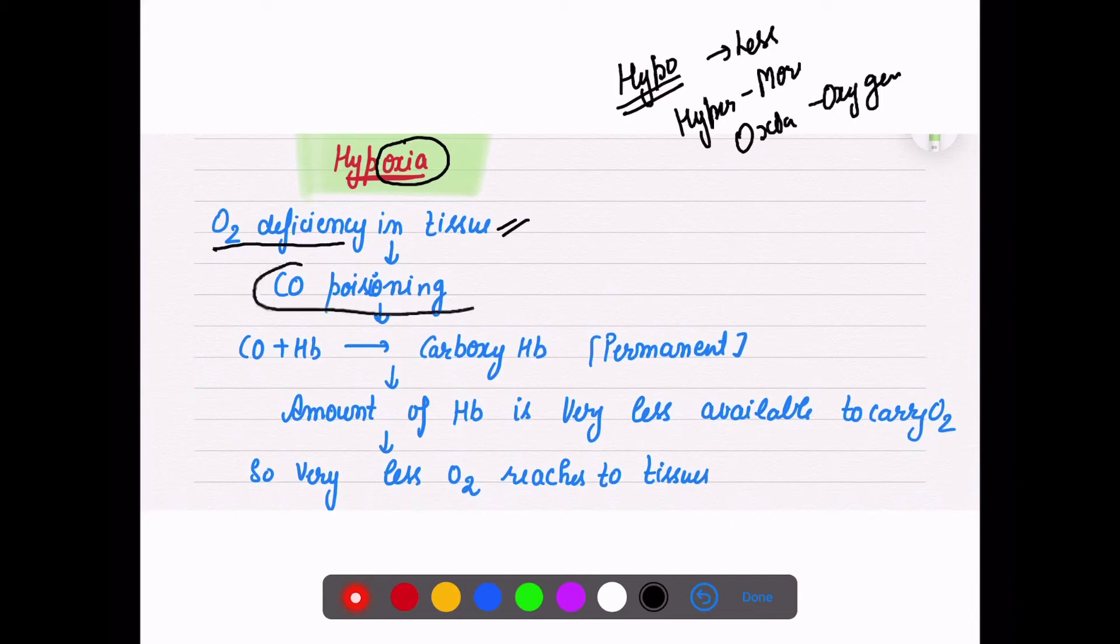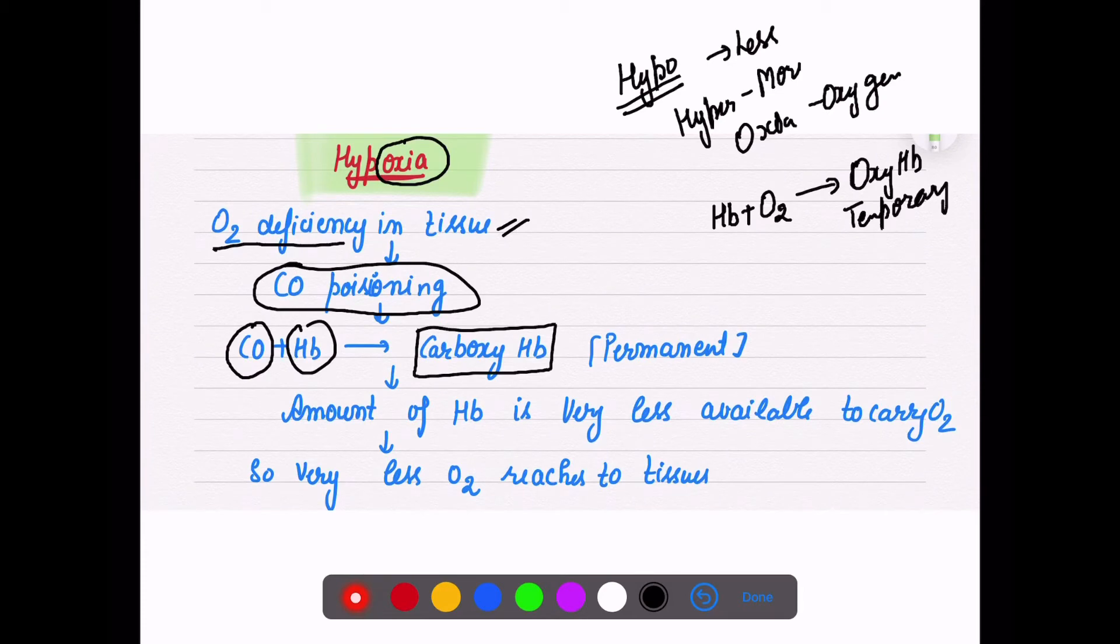This also happens because of carbon monoxide poisoning. What happens is if you are more and more inhaling polluting air, then carbon monoxide combines with hemoglobin and forms a complex called carboxy hemoglobin. Until now we've studied that hemoglobin plus oxygen combine to form oxy hemoglobin complex, and it is a temporary complex.